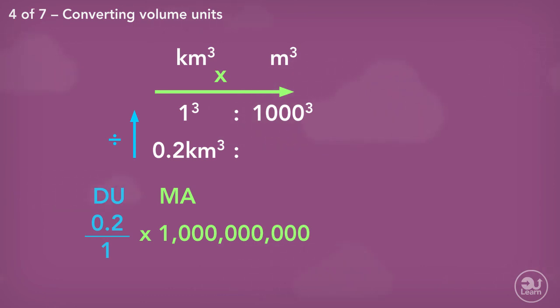Another question. Convert 0.2 kilometers cubed to centimeters cubed. We would convert the value from kilometers cubed to meters cubed, then meters cubed to centimeters cubed. The ratio for kilometers to meters cubed is 1³ to 1000³. As we know the conversion between kilometers to meters is 1000 to 1. Divide up, multiply across. 0.2 kilometers cubed is equivalent to 200 million meters cubed.